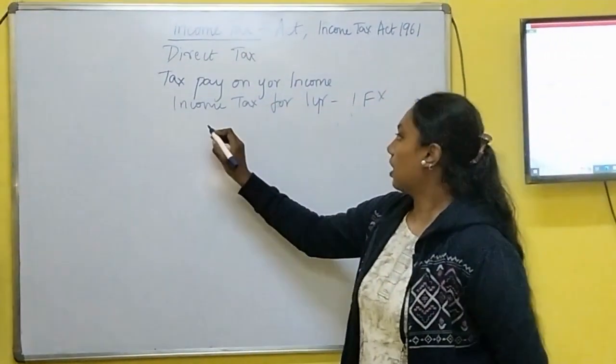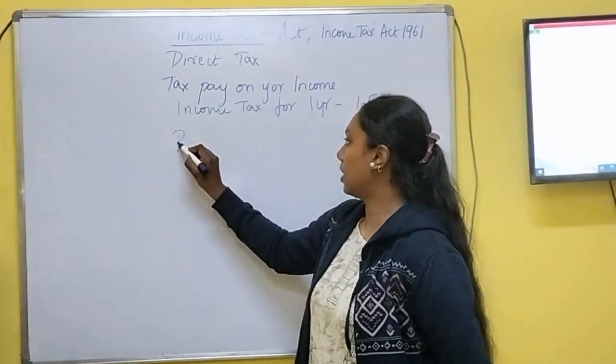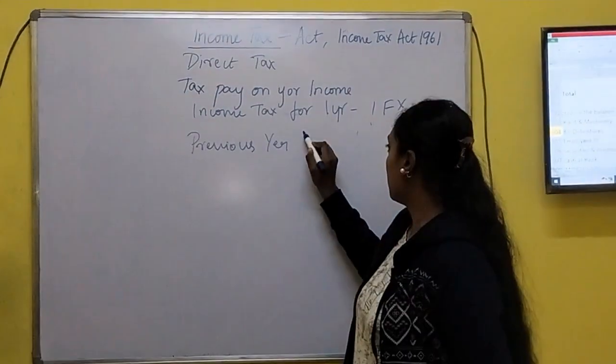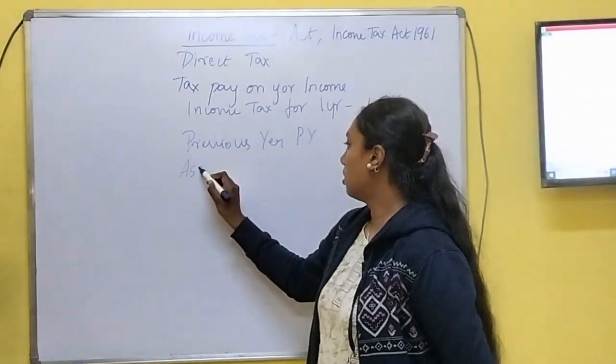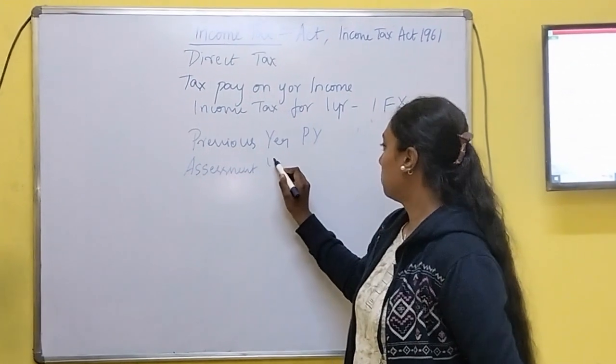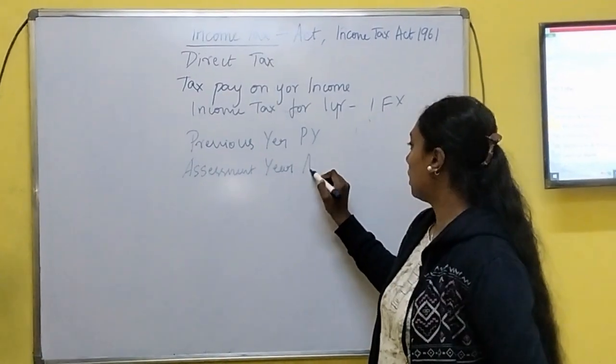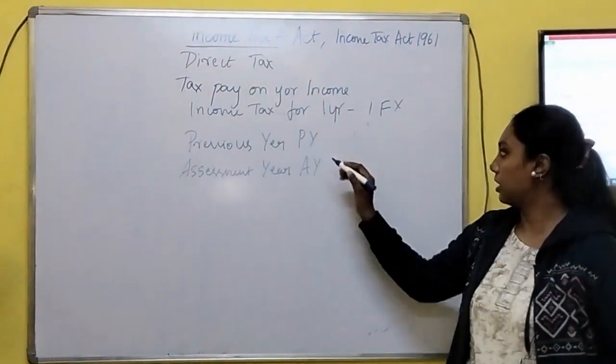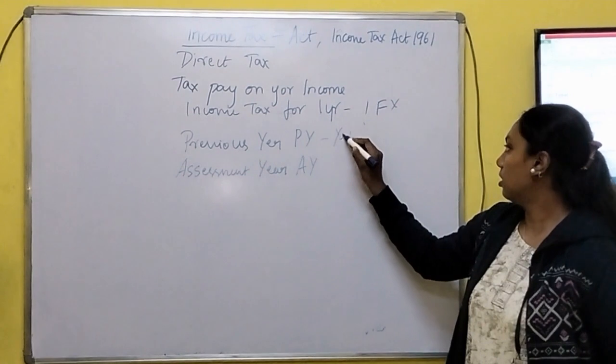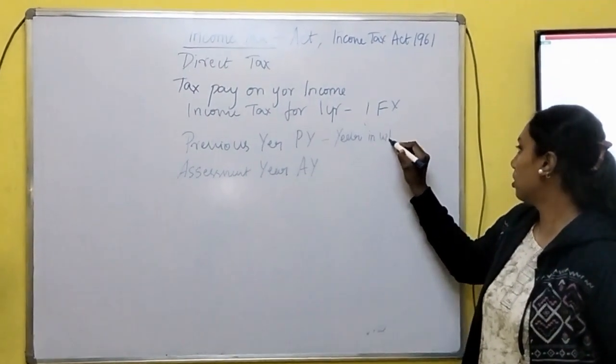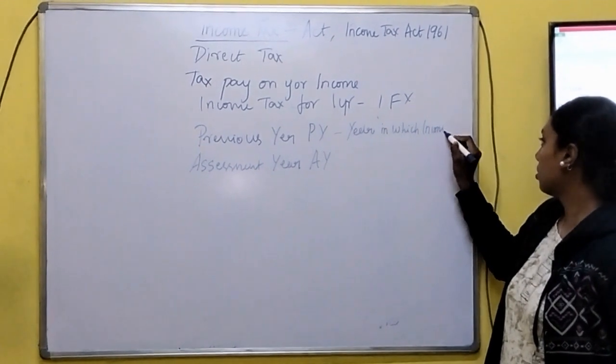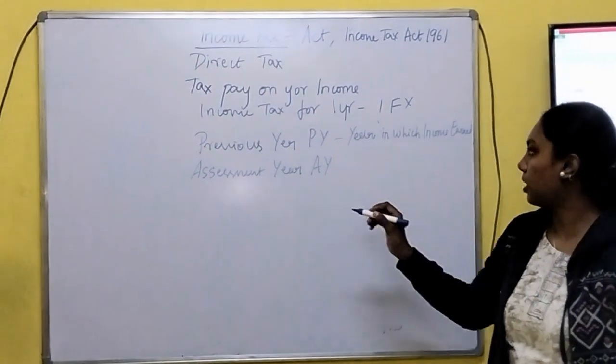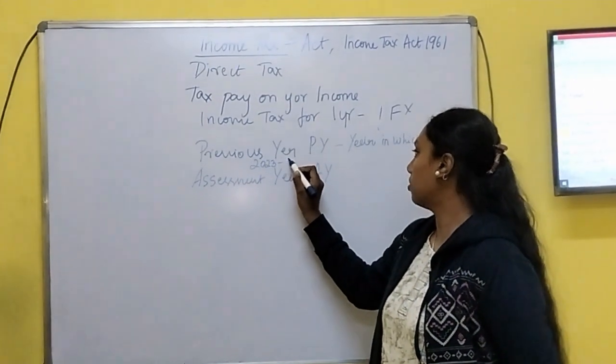Next, in income tax we have two types of years. One is previous year, that is PY, and one more is assessment year. Previous year means the year in which income is earned, that is previous year. For example, you can write 23-24.